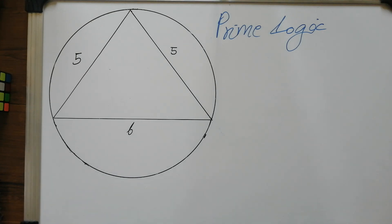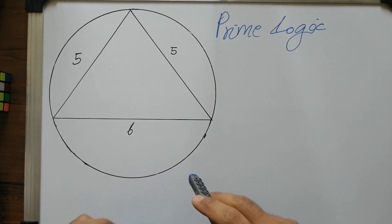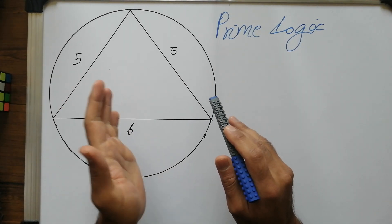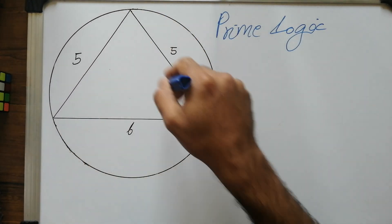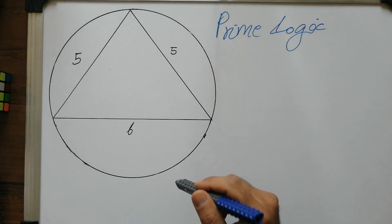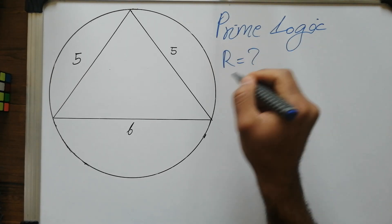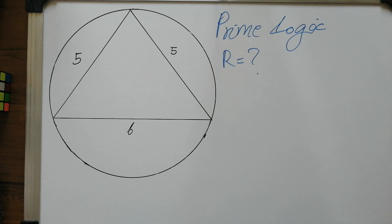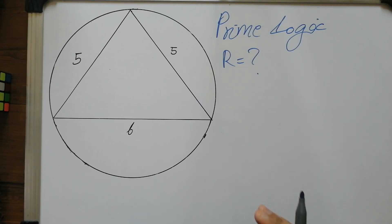Alright, what is it guys — this is such a nice looking problem. If you want to solve it, pause the video now. Welcome to another video on Prime Logic. The problem setup is pretty simple: we have a circle with an isosceles triangle inscribed inside it, and our job is to find the radius of the circumscribed circle.